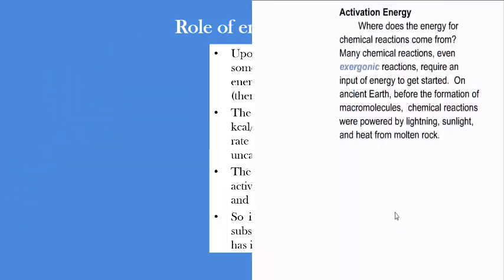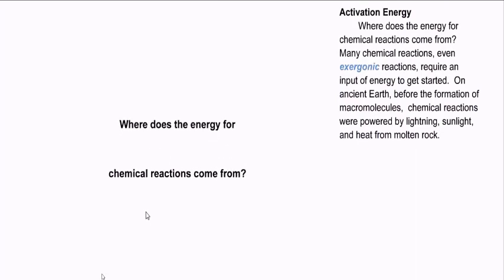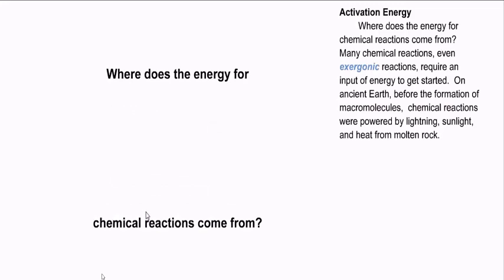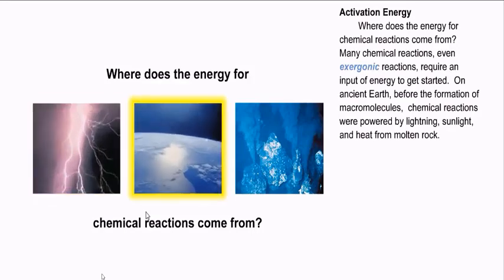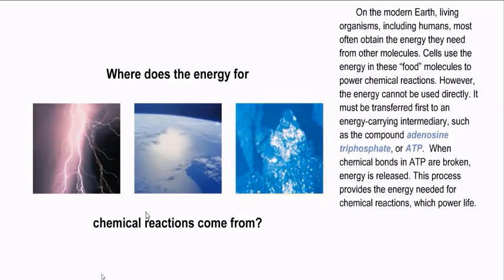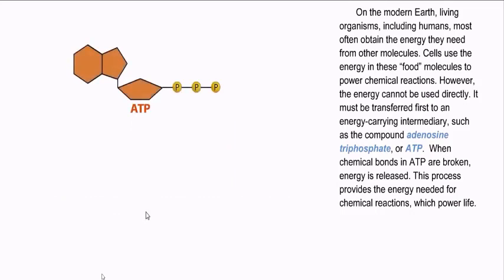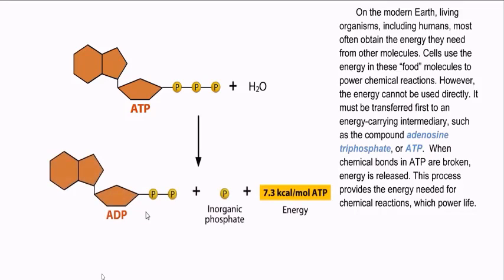Please go through this video for further information. Many chemical reactions, even exergonic reactions, require an input of energy to get started. On ancient Earth, before the formation of macromolecules, chemical reactions were powered by lightning, sunlight, and heat from molten rock. On the modern Earth, living organisms, including humans, most often obtain the energy they need from other molecules. Cells use the energy in these food molecules to power chemical reactions. However, the energy cannot be used directly — it must be transferred first to an energy-carrying intermediary such as adenosine triphosphate, or ATP. When chemical bonds in ATP are broken, energy is released, providing the energy needed for chemical reactions which power life.